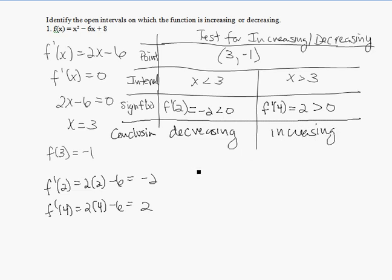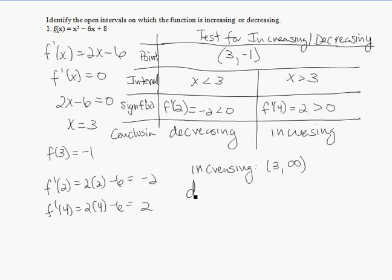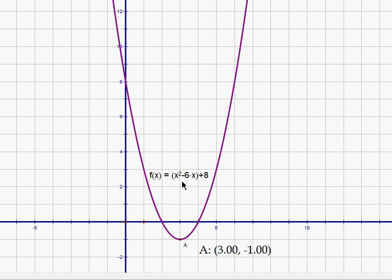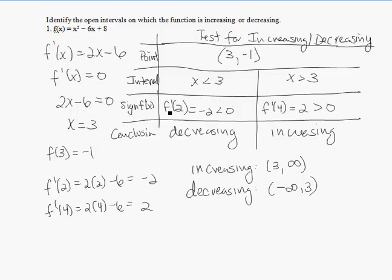So we want to write out our intervals. The function is increasing for x greater than 3, so that would be from 3 to infinity. And it's decreasing from negative infinity to 3. Looking at the graph again, you'll notice the function is decreasing all the way up to x = 3 and then increasing on this side — and we used calculus to verify that using the sign of the first derivative.